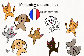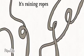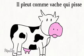The equivalent expression in French is actually, il pleut des cordes. It's raining ropes. Or, il pleut comme vache qui pisse. It's raining like a cow pissing.